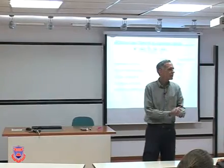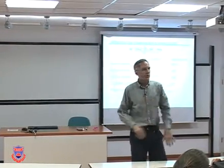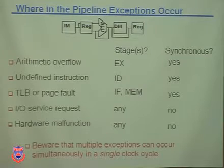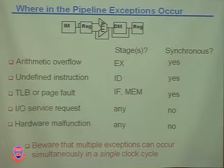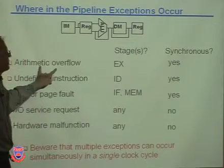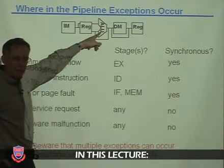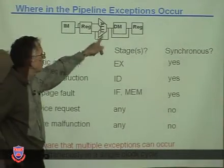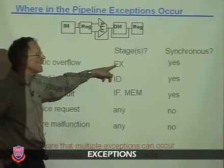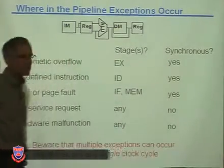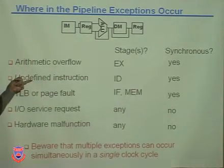We're resuming after the break. We talked about different kinds of exceptions, and now the question is: where do those exceptions happen in the pipeline? Arithmetic overflow happens in the execute stage, and it's a synchronous exception because it's caused by the instruction.